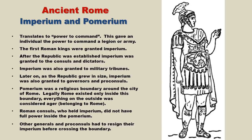Roman consuls generally had Imperium everywhere. So let's say a Roman consul was situated in Syria and decided to enter Egypt — he could still issue orders to the legions inside Egypt. In addition, a Roman consul had absolute authority over everyone else with Imperium, except for the other Roman consul. Remember, there were always two Roman consuls elected during the Republic. If two Roman consuls happened to be in the same vicinity, they would rotate the command on a daily basis.